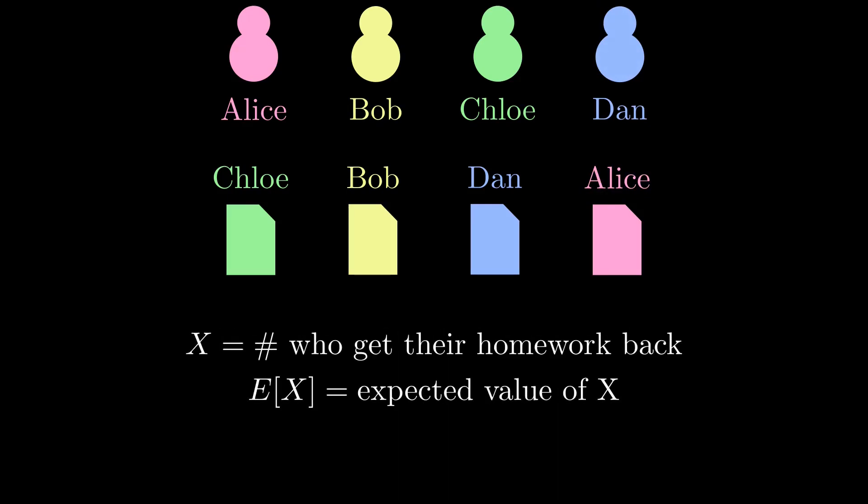The answer to our question, when phrased mathematically, is the expected number of fixed points of a random permutation of n objects.